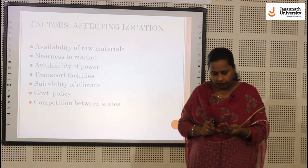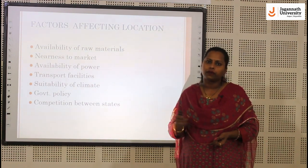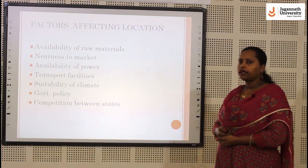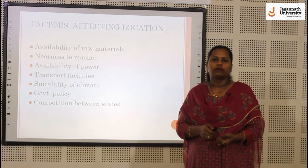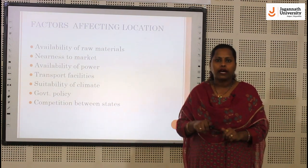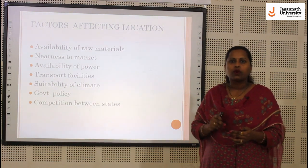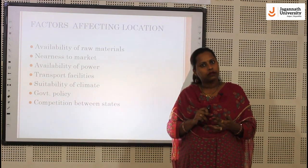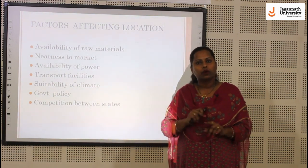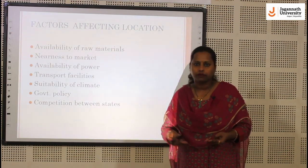Transport facilities — whether it is air transport, road transport, or rail transport — should be near to the existing unit. Suitability of climate is also important: some products require a humid climate, some require a cold climate. Whatever type of climate is required, you should select that type of location. For example, in the case of cotton production, all the units are near the coastal areas because the coastal areas provide a good environment to grow cotton.